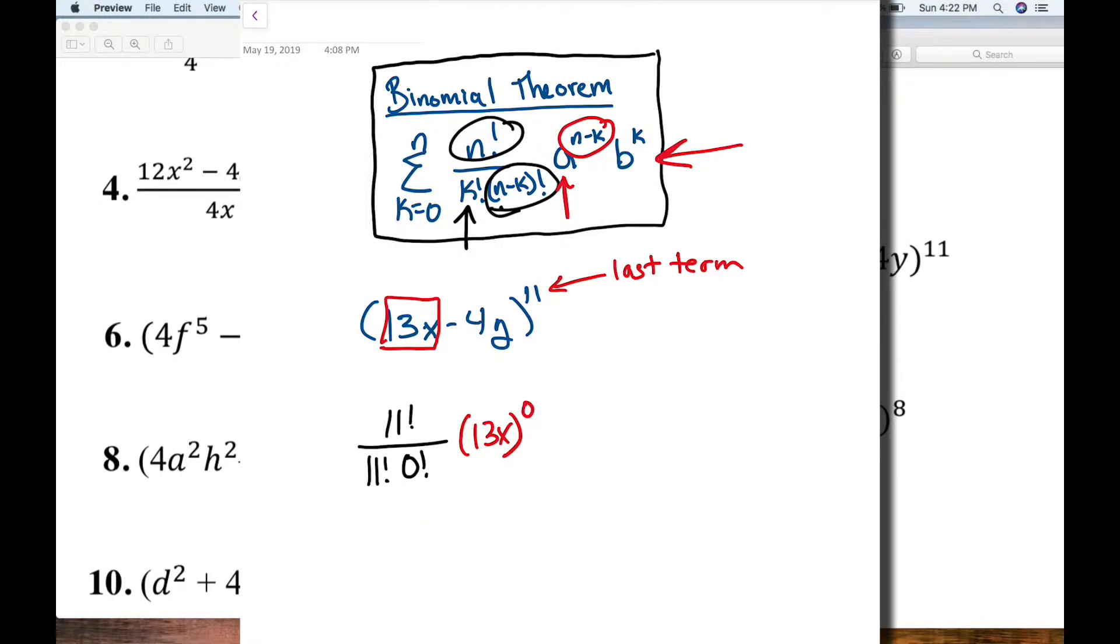And my a, my a term is my 13x. So that's my a term, 13x. And again, it's n minus k, and I know that to be 0. So that's going to be raised to the 0 power. And then my next term is my b, my b raised to the k power. And I know that my k is 11. And my b is negative 4y. So that's negative 4y raised to the 11th power.